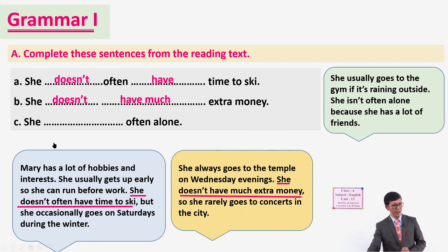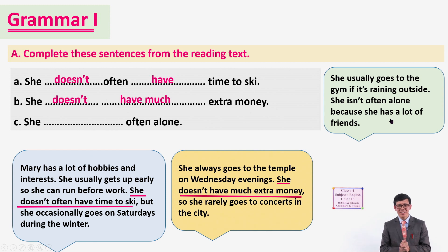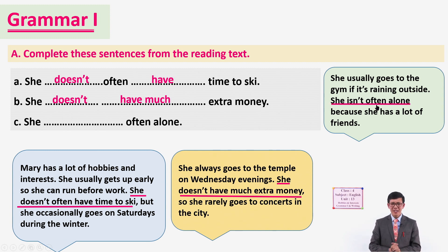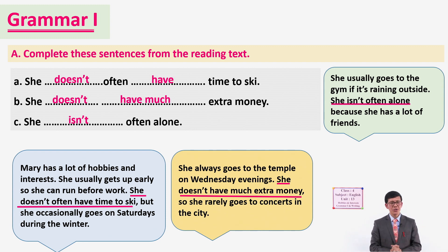Now the last one - sentence C, 'often alone.' Let's read the third part of the text: 'She usually goes to the gym if it's raining outside. She isn't often alone because she has a lot of friends.' The missing words are 'isn't often alone.' I hope all of you found the information easily from the reading texts we did earlier.